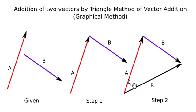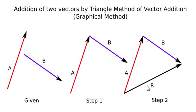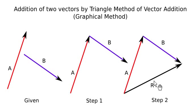Just its sense is opposite to the sense of A and B. In this arrangement we have the head of A at the tail of B, and the head of B at the head of the resultant vector — this is the opposite sense. The resultant vector is in the opposite sense. Complete the triangle and you will get the resultant vector.